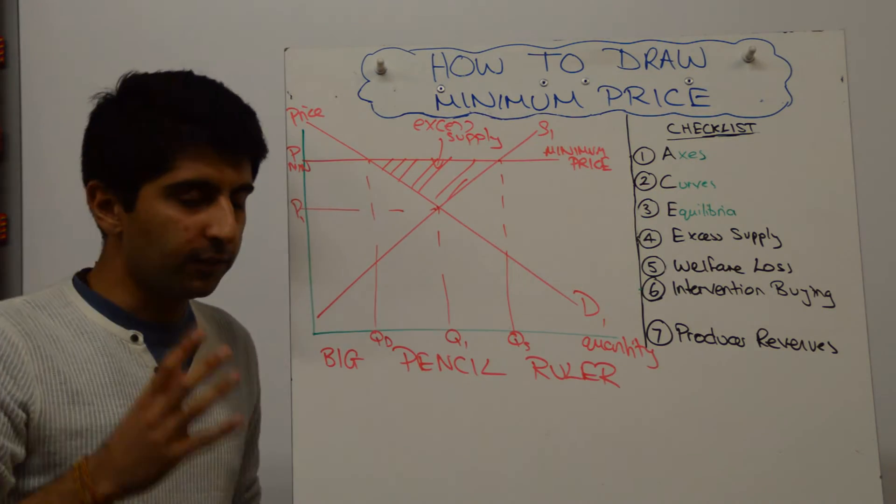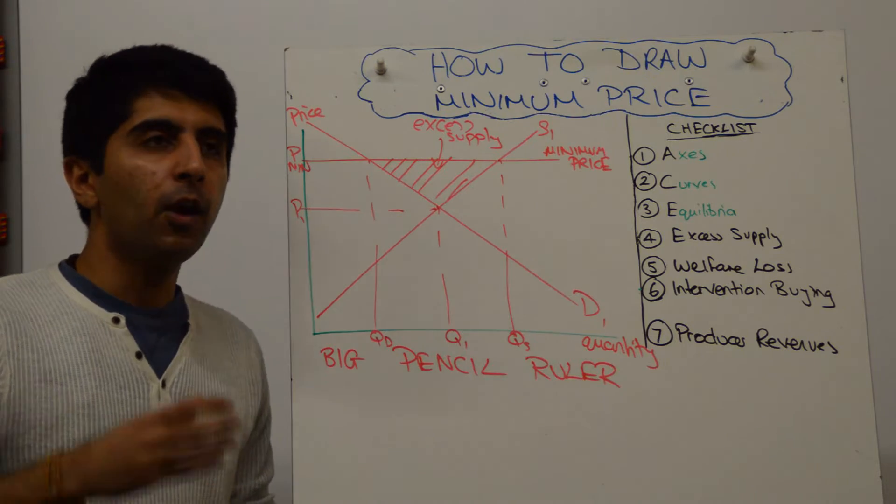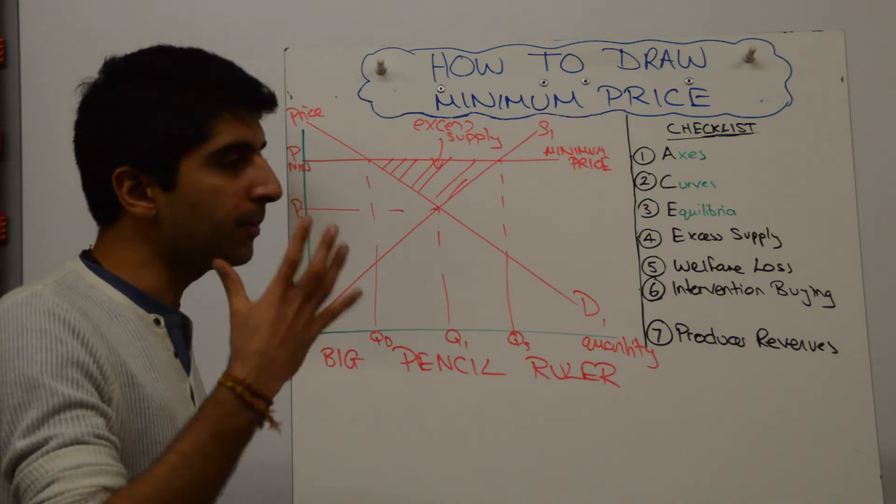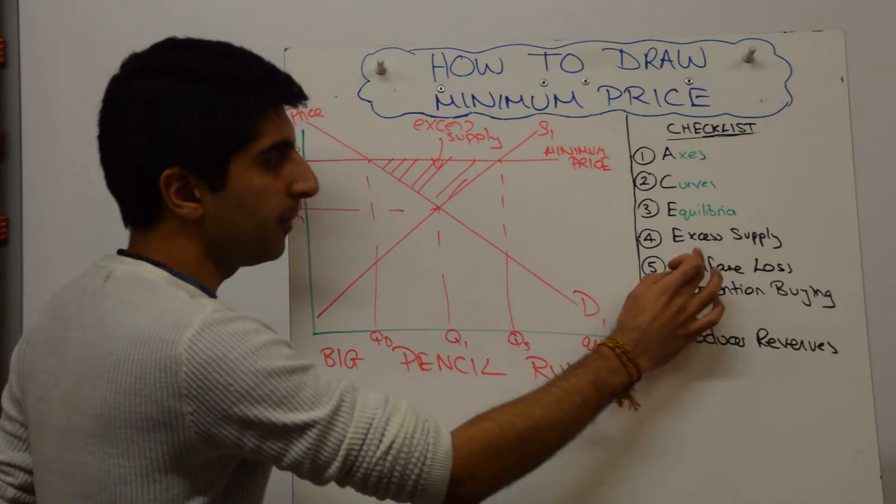So I want to move now to the checklist. So before you draw this diagram, what's actually in your head? What do you want to show? Because you should know, minimum price implies that there is going to be an excess supply.